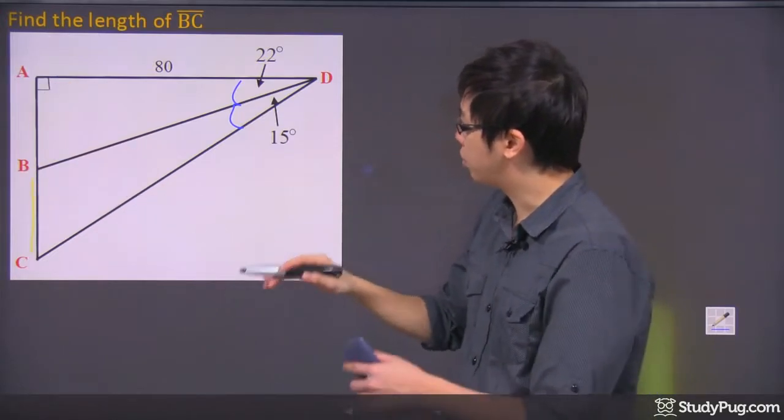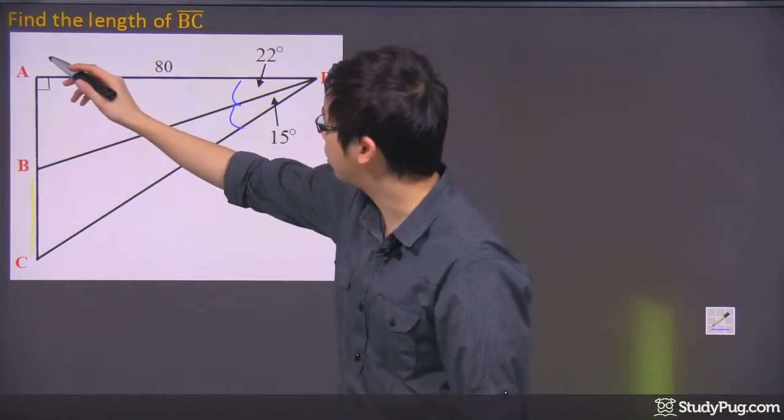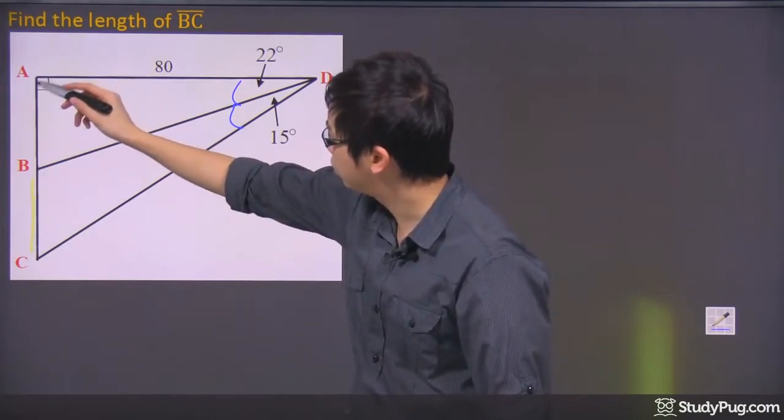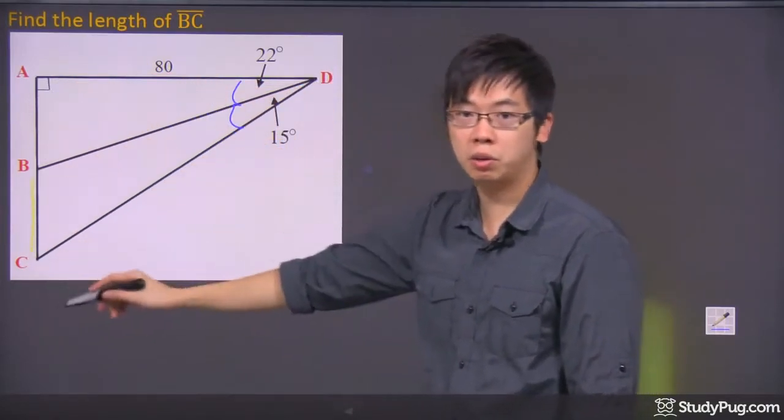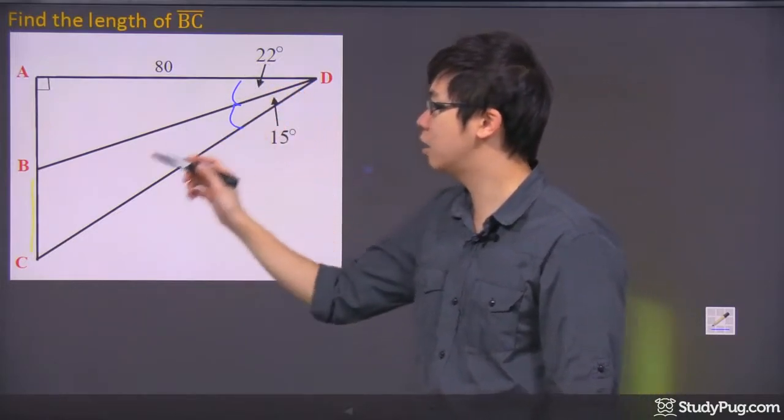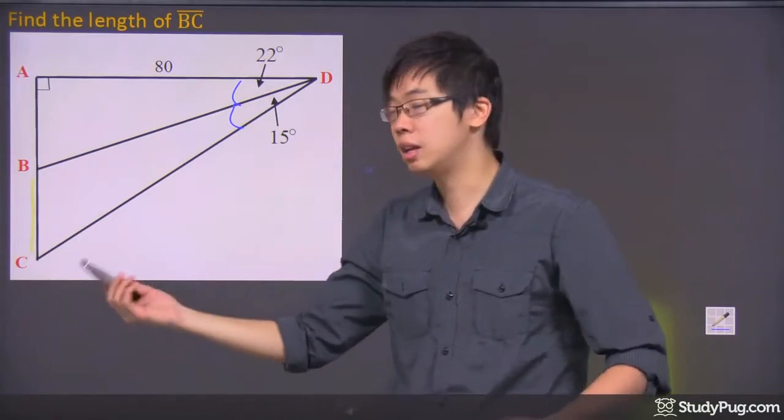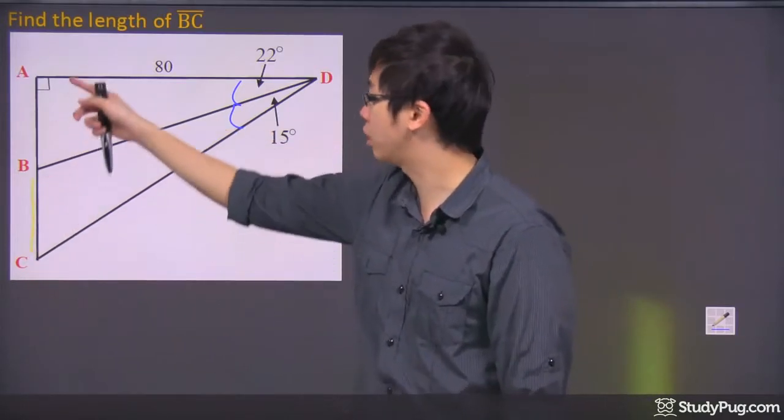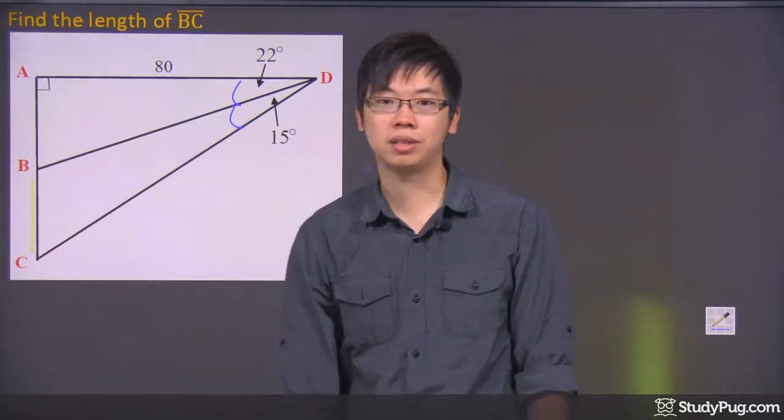Then, if you look at the bigger scale, if I just go ahead and treat this big triangle right here, because I know this whole thing here is 22 plus 15, I can also figure out the A to C. Then I can take the A to C, subtract A to B, then I'll get the B to C.